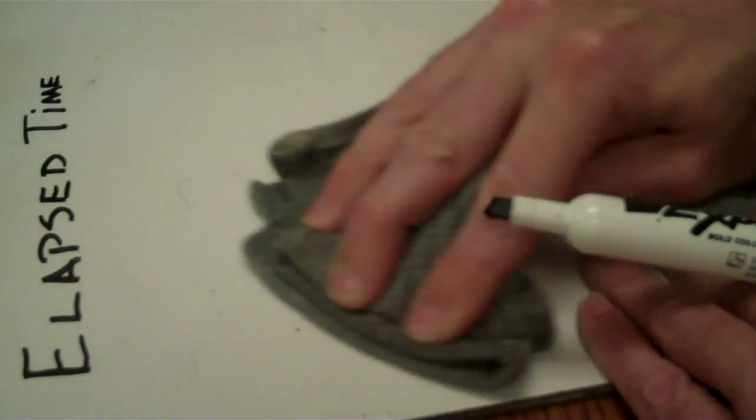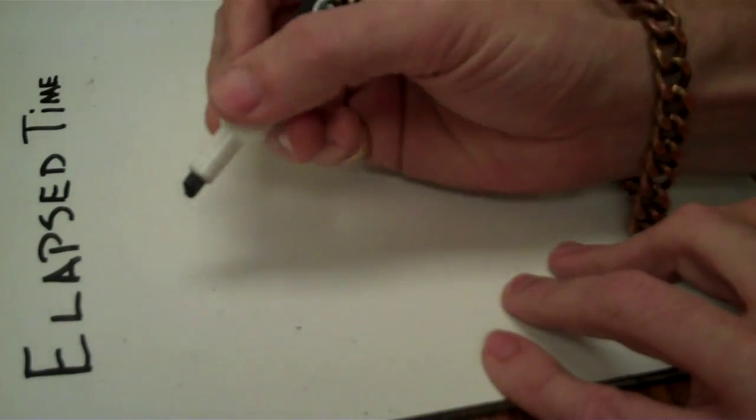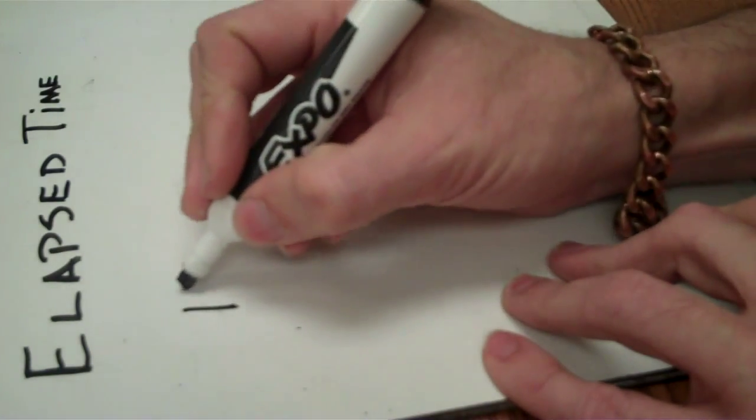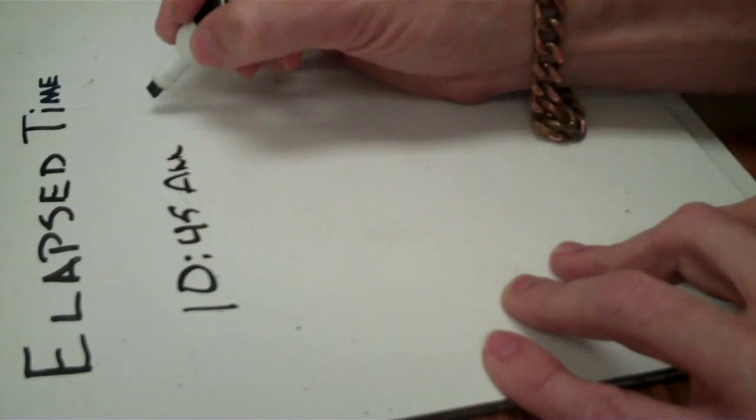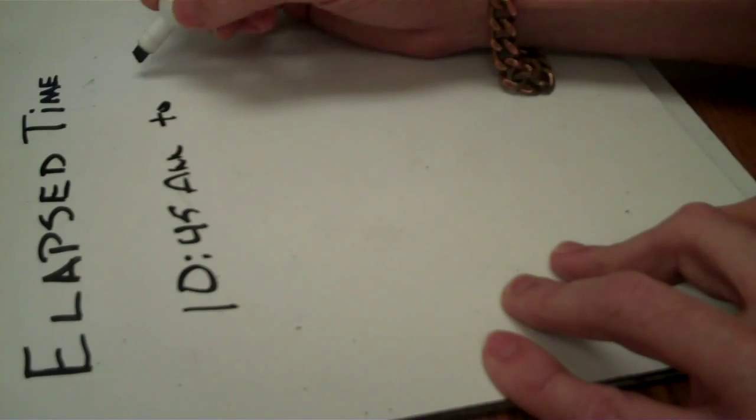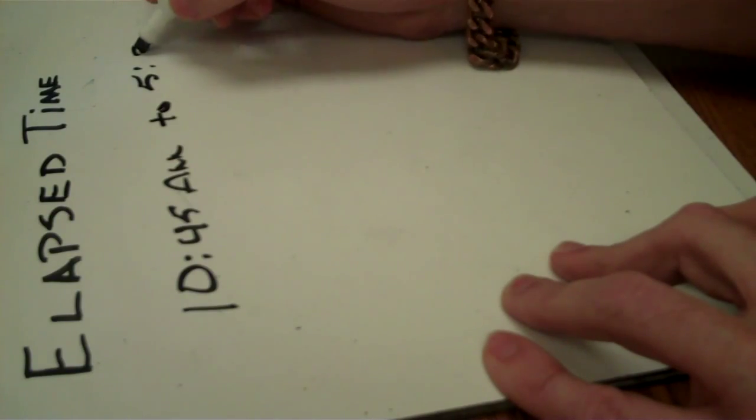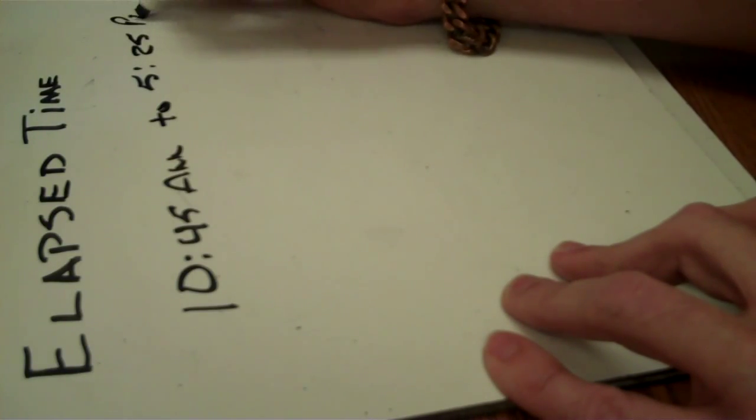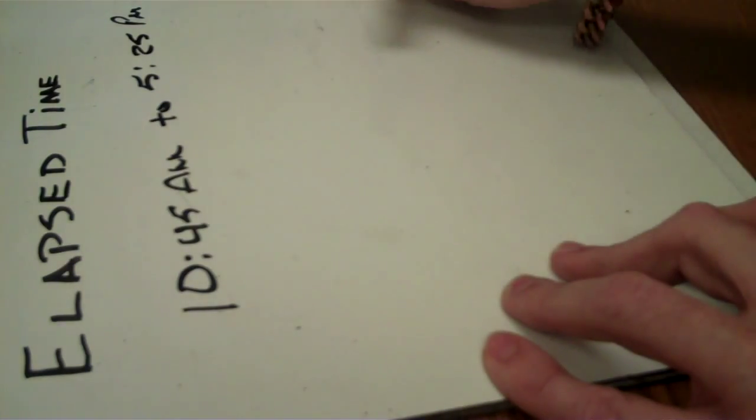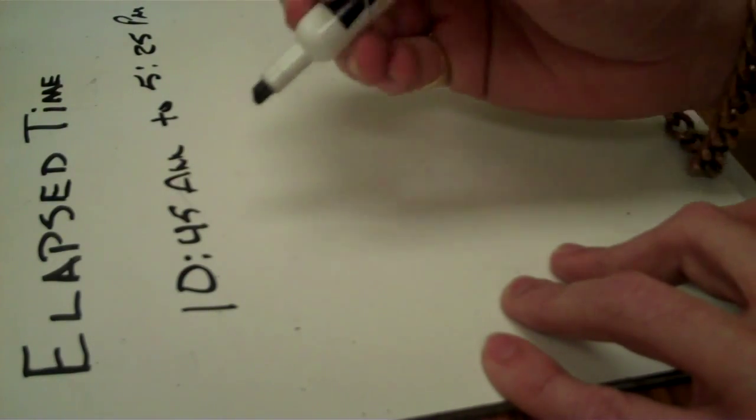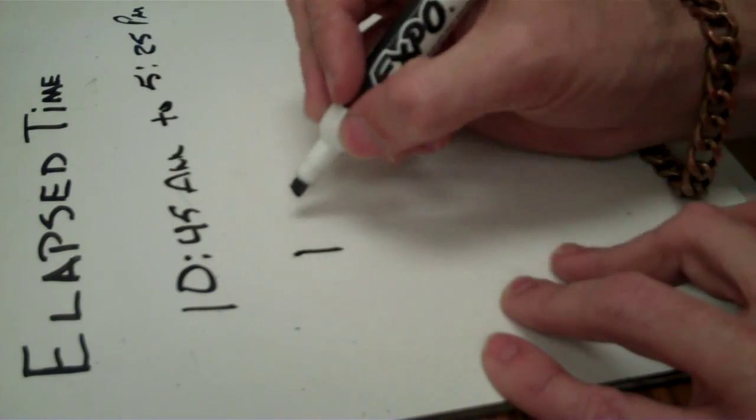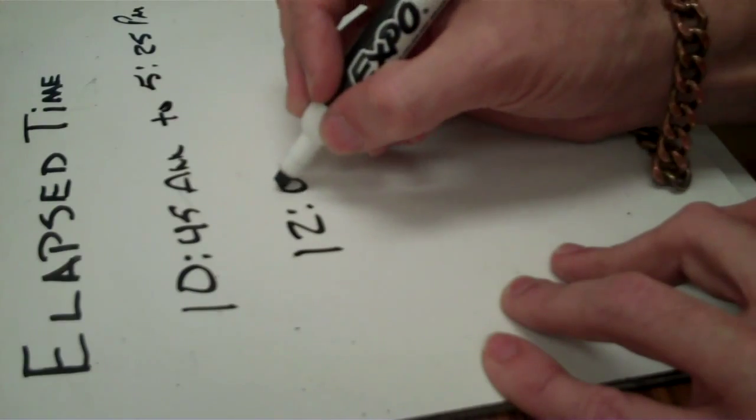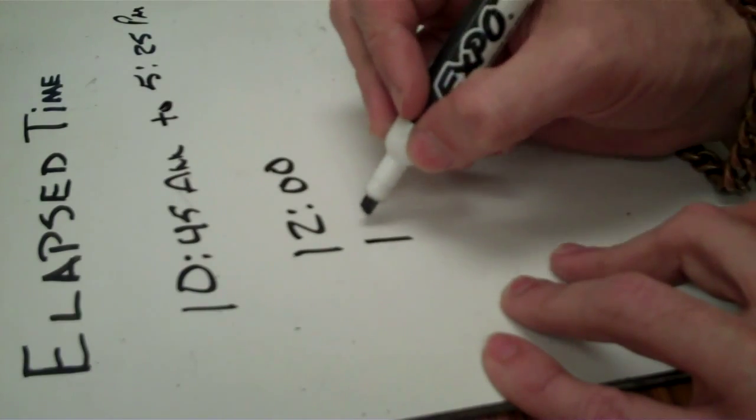Really quick, another thing that you are having difficulty doing, if you are given a time, let's say 10:45 a.m., and you wanted to find the elapsed time to 5:25 p.m., that posed a problem because you are going from a.m. to p.m. What I suggest doing is get this a.m. into the p.m. by subtracting that time from 12 o'clock.